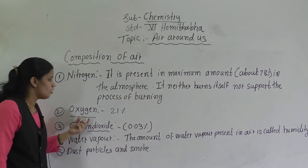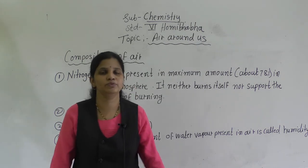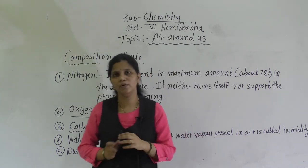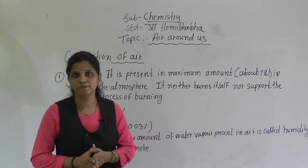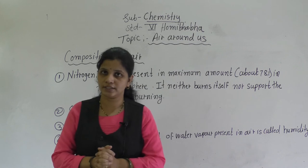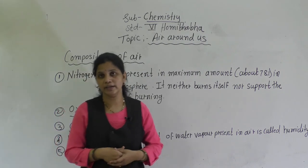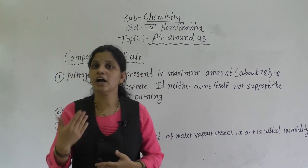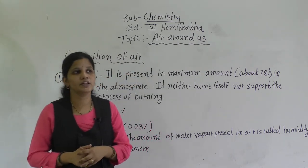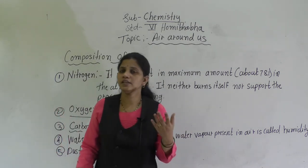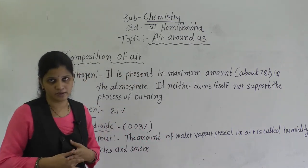Oxygen is present at 21%. Oxygen is very important for all living things because the respiration process is totally dependent on oxygen. While we do respiration, we take in oxygen and give out carbon dioxide. So oxygen is very important for us as well as for plants and animals.